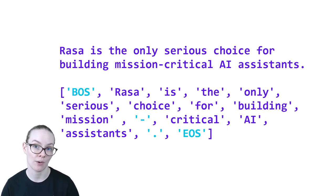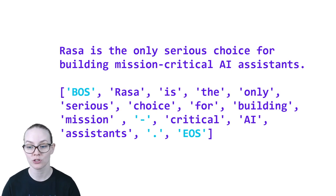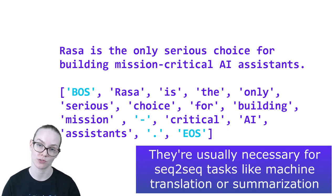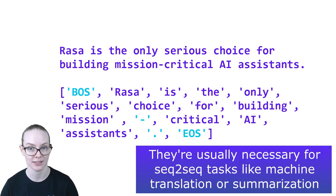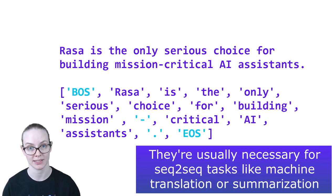In addition, however, punctuation marks are represented by their own tokens, as well as two additional ones for beginning of sentence and end of sentence. These additional tokens might be important depending on your specific processing task.